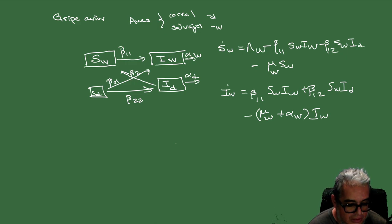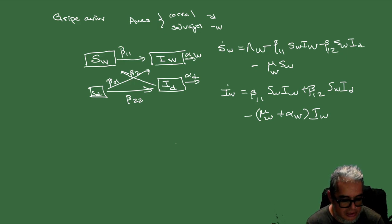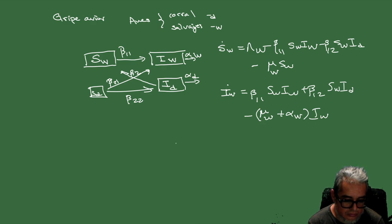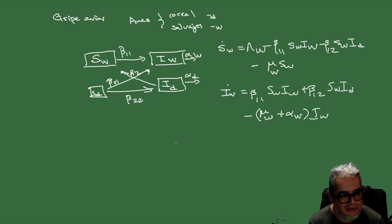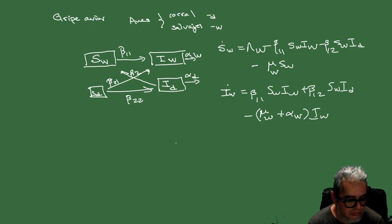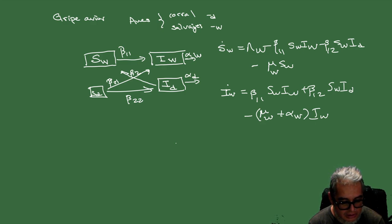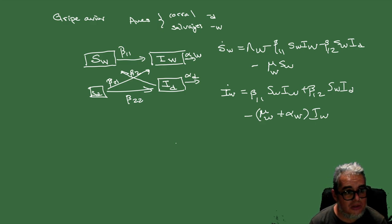Entonces lo que vamos a hacer en la siguiente sesión es tomar algunos de estos ejemplos que estuvimos garabateando esta ocasión e intentar calcular su parámetro R0. Vamos a ver dos formas de calcularlo: el acercamiento jacobiano y el de la matriz de siguiente generación. No en una sola clase seguramente, pero vamos a abordar los dos. De momento dejémosle aquí y nos vemos en la siguiente sesión.